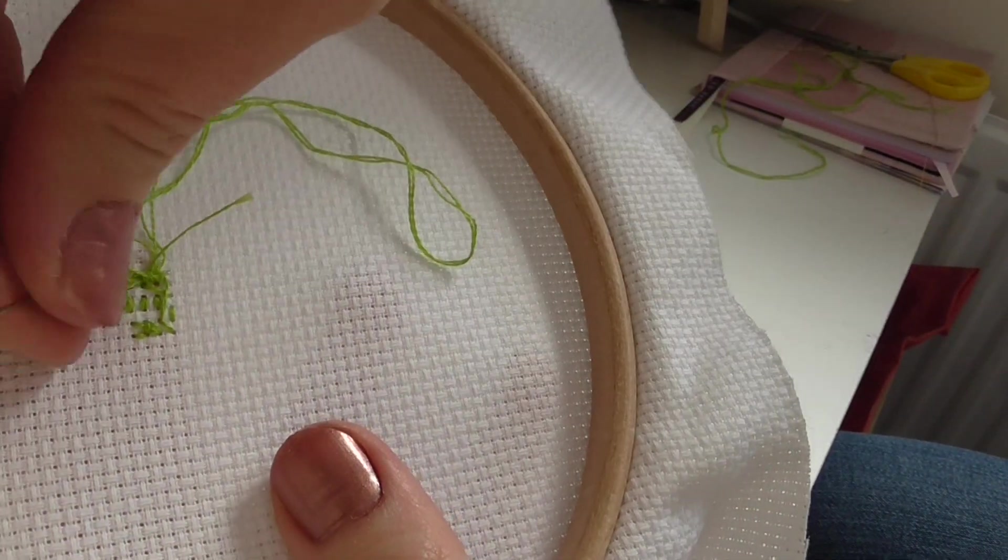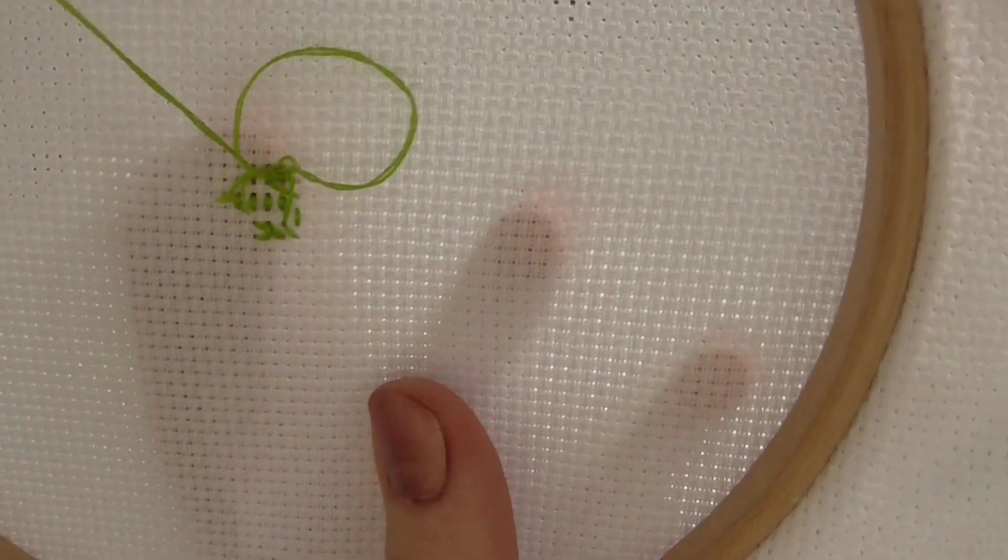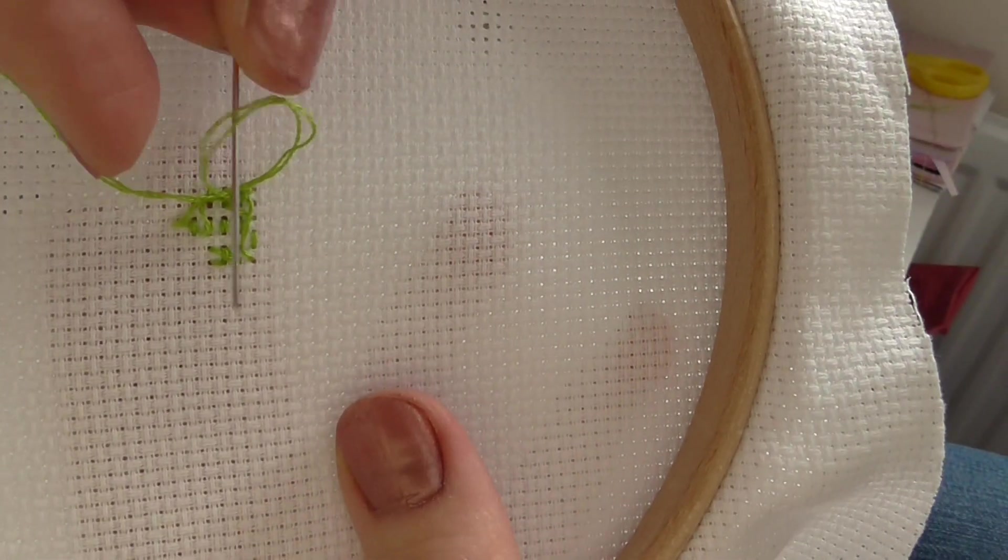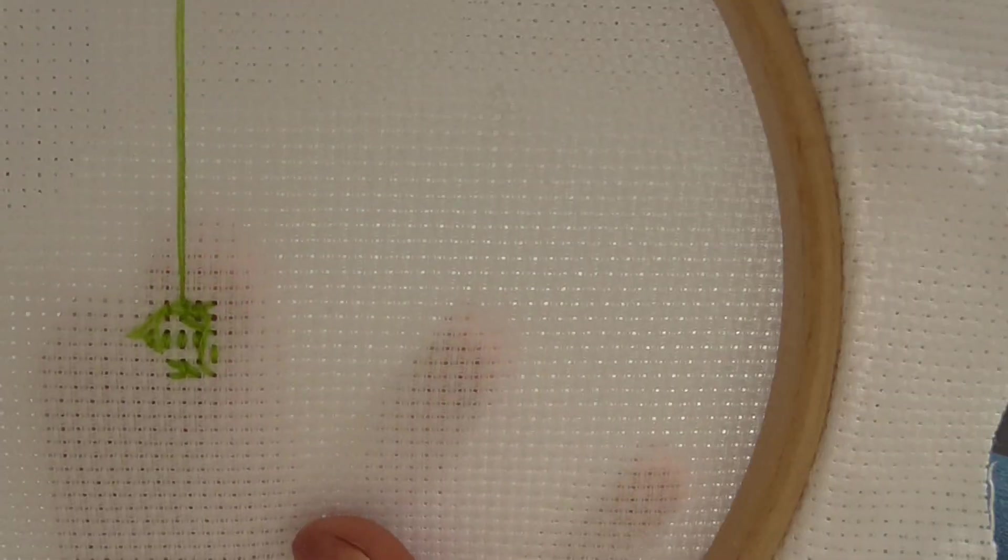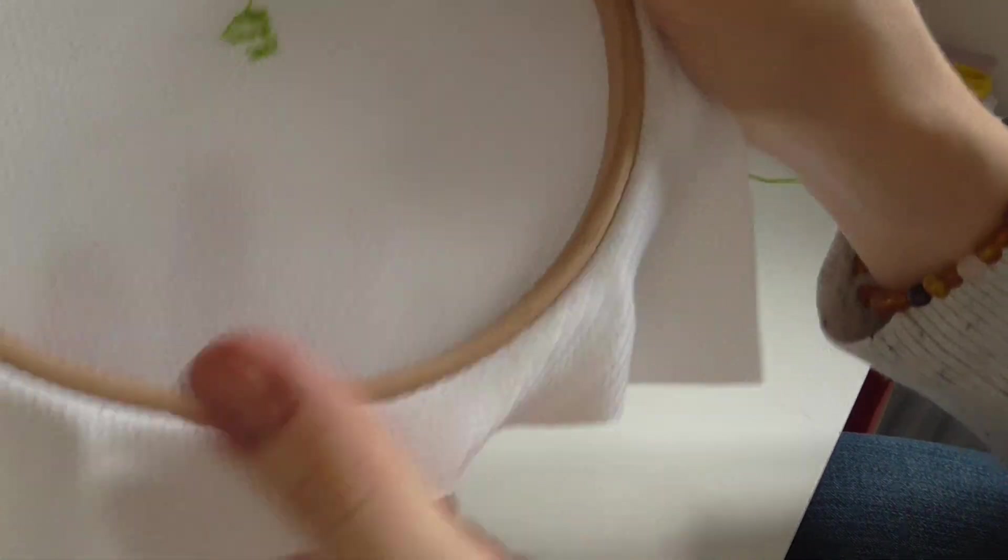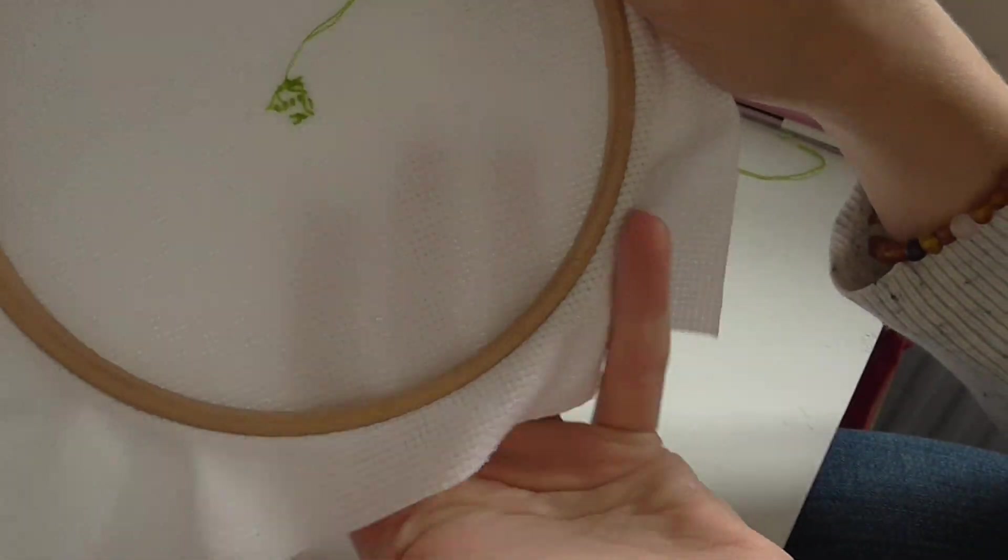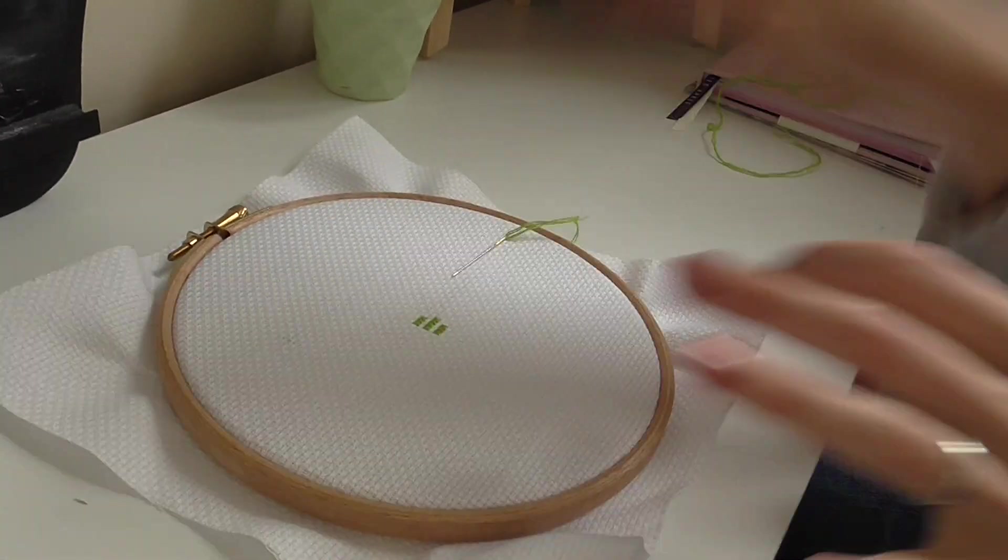Pull it and then just leave a little loop, and you literally just go through the loop and pull. You just make a little knot and it makes that extra bit secure. So yeah, that's it, that's how to tie off your thread, nice and easy.